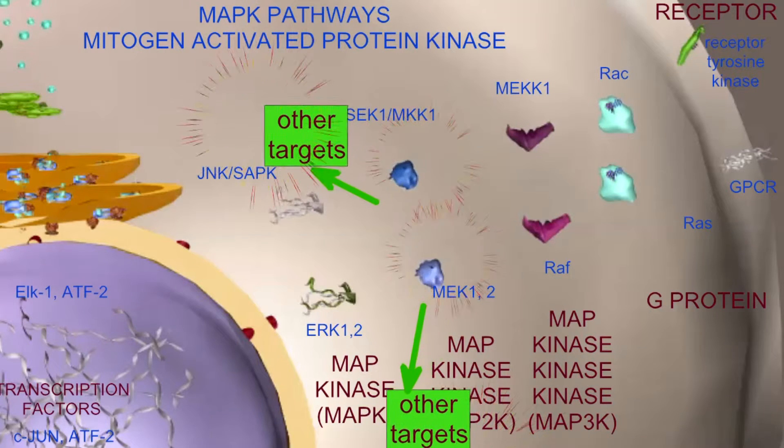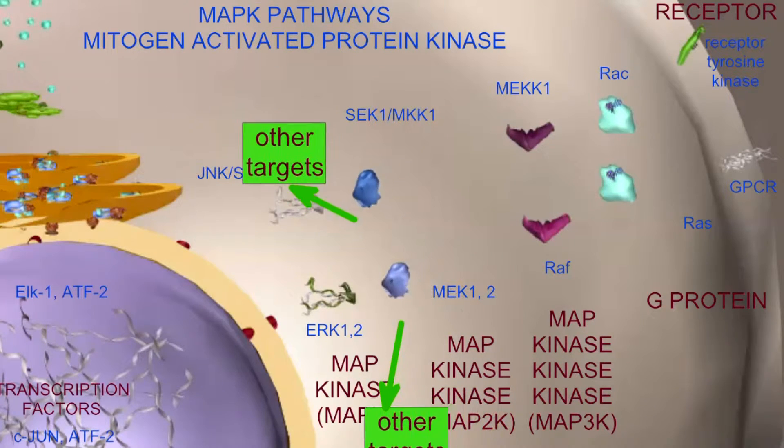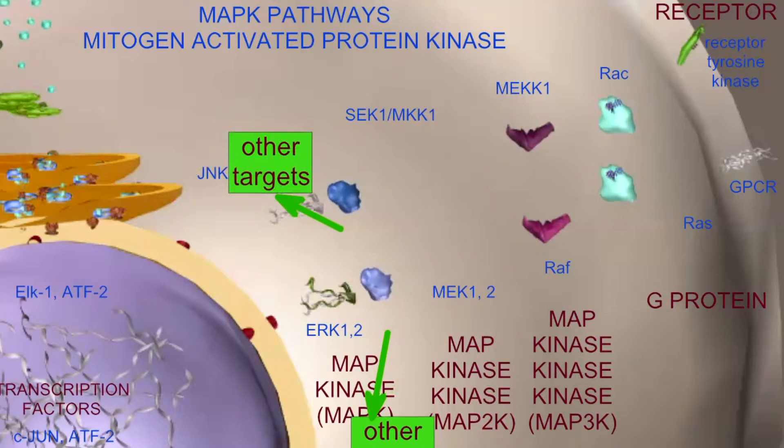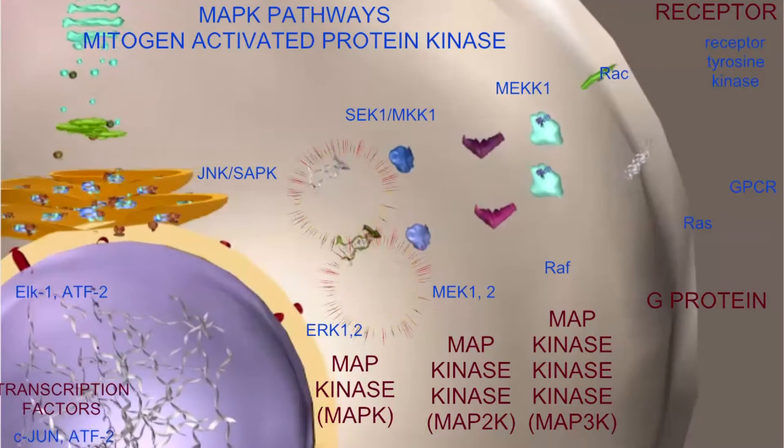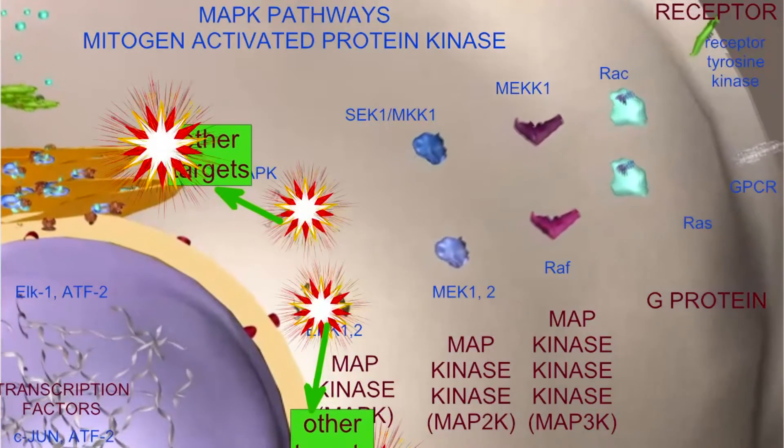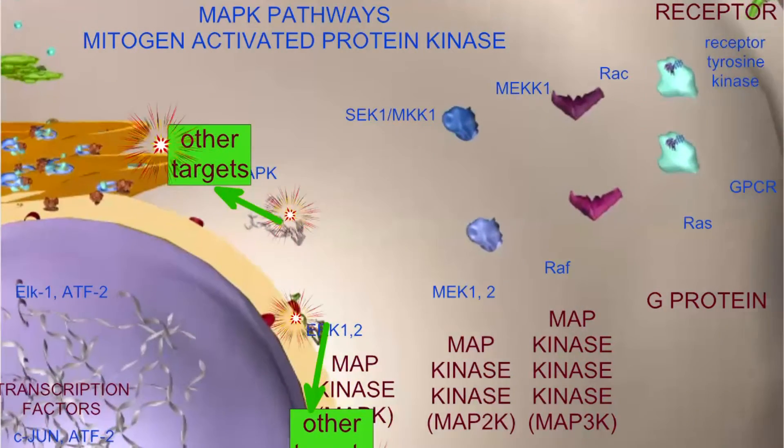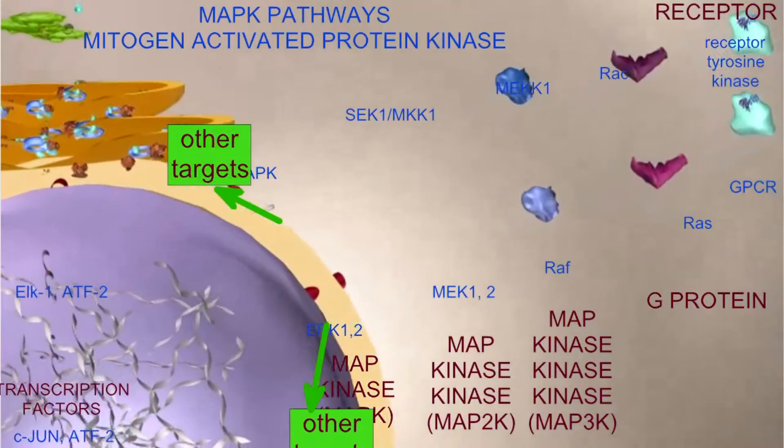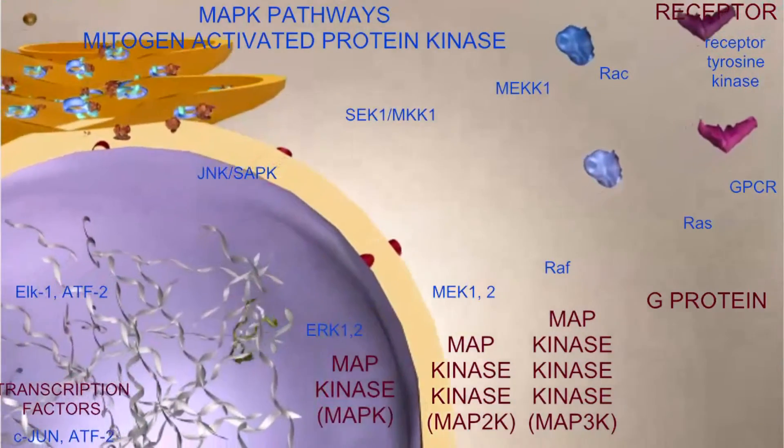If a signal is sent to the nucleus to change the transcription of genes, transcription factors can bind to multiple genes, and thus the original signal can diverge and have multiple distinct effects through the action of multiple distinct effectors.